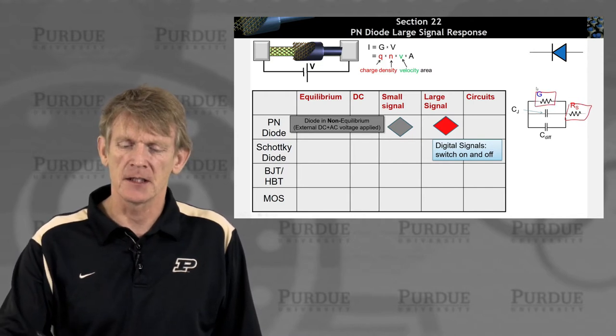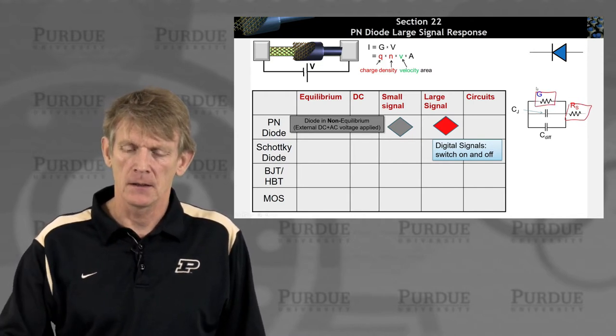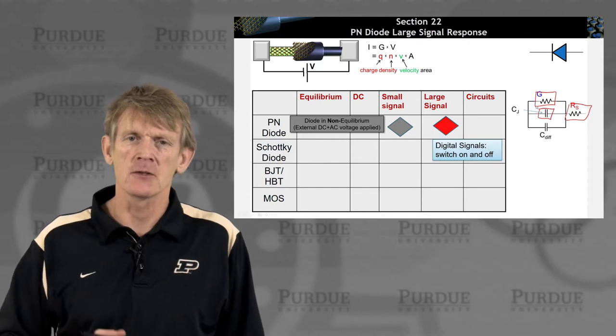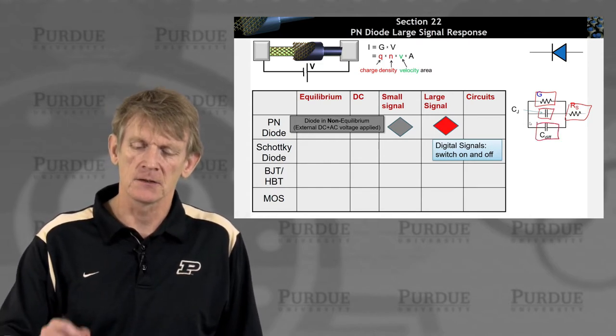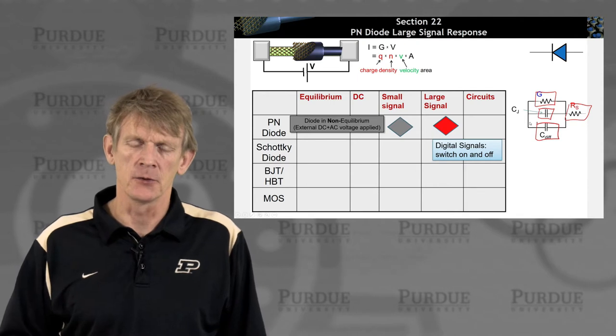a conductance, and two capacitors. The junction capacitance was acting really fast, and the diffusion capacitance was limited by the carrier diffusion.